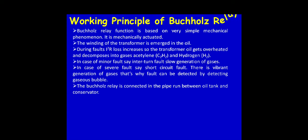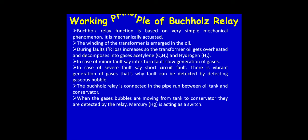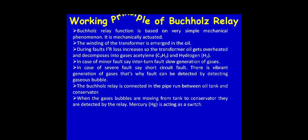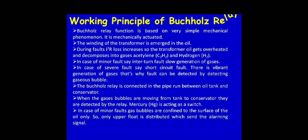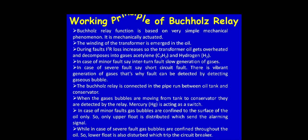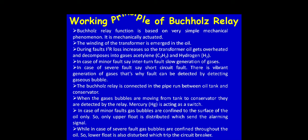The Buchholz relay is connected in the pipe running between the oil tank and the conservator. When gas bubbles move from the tank to the conservator, they are detected by the relay. Mercury acts as a switch. In case of minor faults, bubbles are confined to the surface of the oil only, so only the upper float is disturbed, which sends an alarm signal. In case of severe faults, gas bubbles are confined throughout the oil, so the lower float is also disturbed, which trips the circuit breaker.